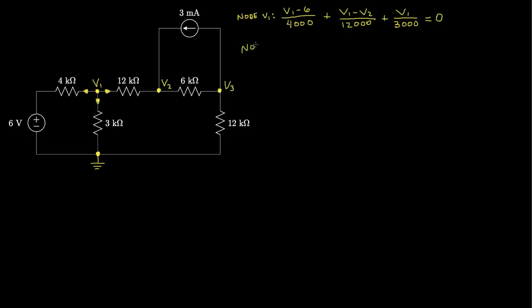Next, we move to the node at V2. At V2, we have the current flowing out through the 12-kilohm resistor, defined in the opposite direction from V1, giving (V2 minus V1) / 12,000. There's also a current source flowing into this node, so we subtract that: 3 times 10 to the minus third, or 3 milliamps. And the current flowing through the next branch is (V2 minus V3) / 6,000. We set that equal to zero.